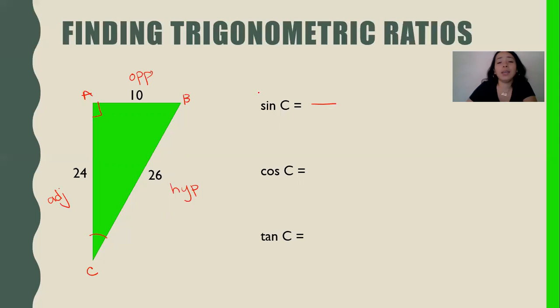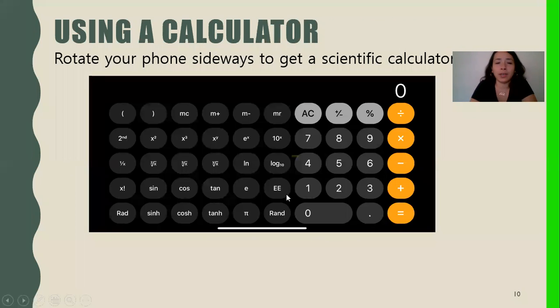For sine of C, remember SOHCAHTOA. What's my opposite over hypotenuse? Opposite 10, hypotenuse 26. For cosine, adjacent over hypotenuse. Adjacent is 24, hypotenuse is 26. And last, tangent is OA, opposite over adjacent. That's 10 for opposite and 24 for adjacent. If you know how to simplify, go ahead and simplify. If you don't, leave it as it is for now and during office hours that's a good time to learn.